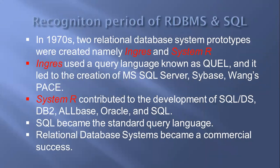In the 1970s, two relational database system prototypes were created, namely INGRES and SYSTEM R. INGRES used a query language known as QUEL and led to the creation of MS SQL Server, Sybase, and Ingres. SYSTEM R on the other hand contributed to the development of SQL, DB2, Allbase, Oracle, and SQL — Structured Query Language. SQL became the standard query language, and relational database systems became a commercial success.